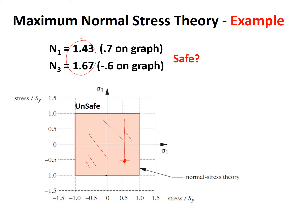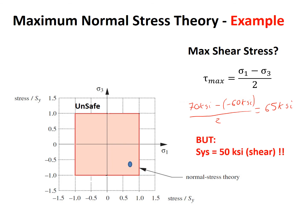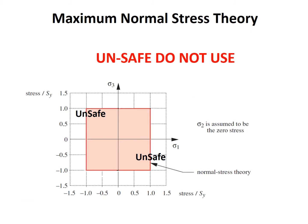The problem with the maximum normal stress theory is that it doesn't take into account our maximum shear stress, where maximum shear stress equals sigma 1 minus sigma 3, all divided by 2. Calculating: 70 ksi minus negative 60 ksi, divided by 2, gives a maximum shear stress of 65 ksi. However, our shear strength is only 50 ksi. So we have a problem — the maximum normal stress theory is unsafe. Do not use.